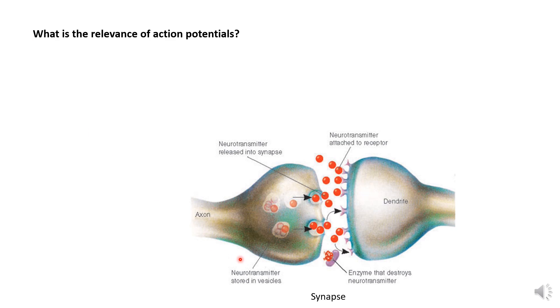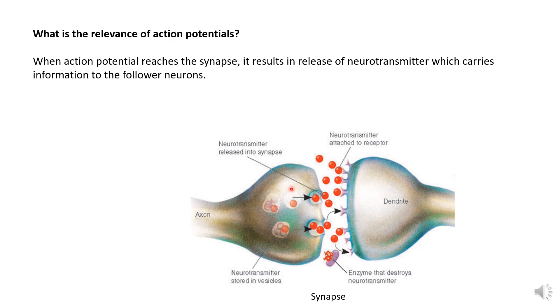In a short summary, action potentials determine the communication between two neurons. If we consider a contact point between two neurons — a synapse — where this is the axon terminal of the first neuron that gives outputs, and this is the dendrite of the second neuron which receives input, this communication happens in the form of neurotransmitters. The important point is that neurotransmitters are released only when an action potential reaches the axon terminal. So in that sense, the action potential determines when this neuron gives some information to the next neuron — that is why action potentials are the currency of neural activity.